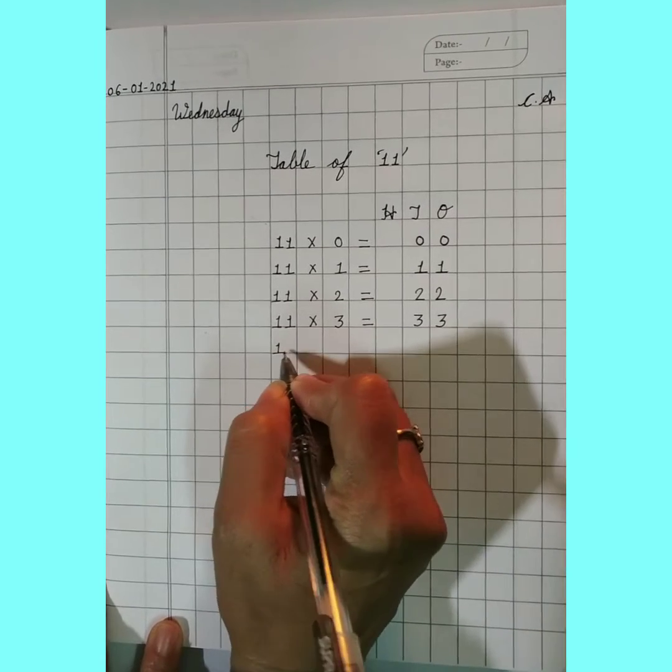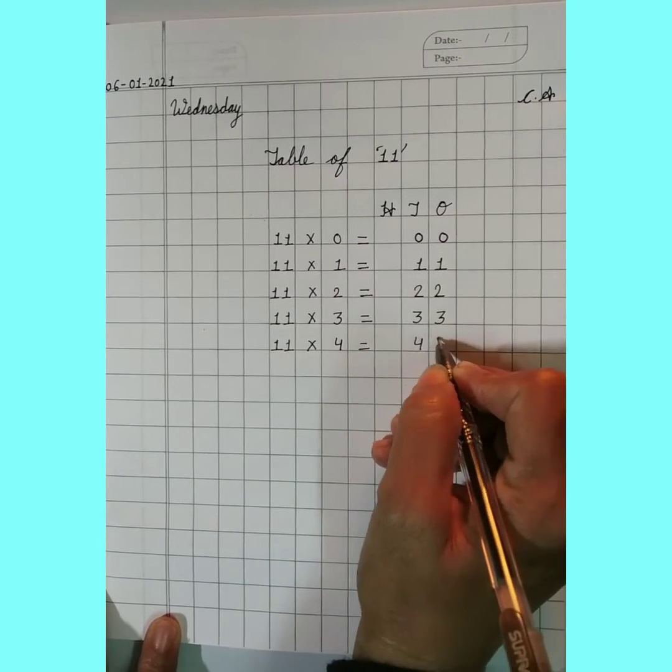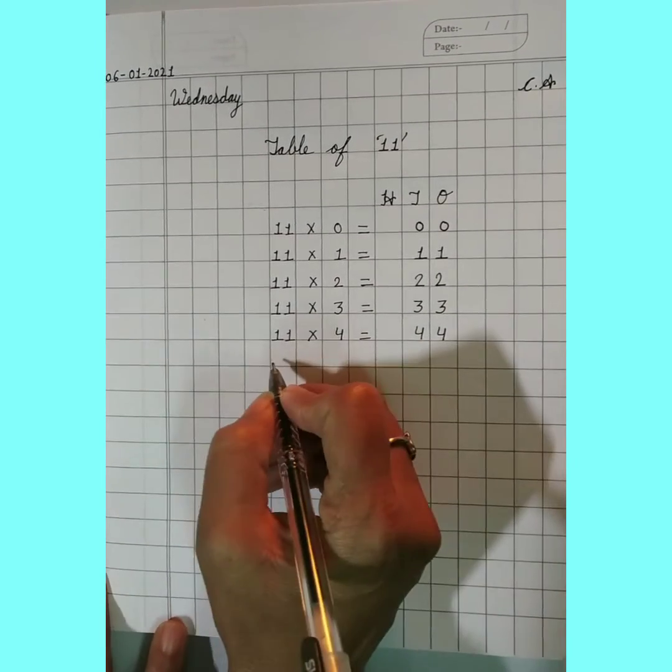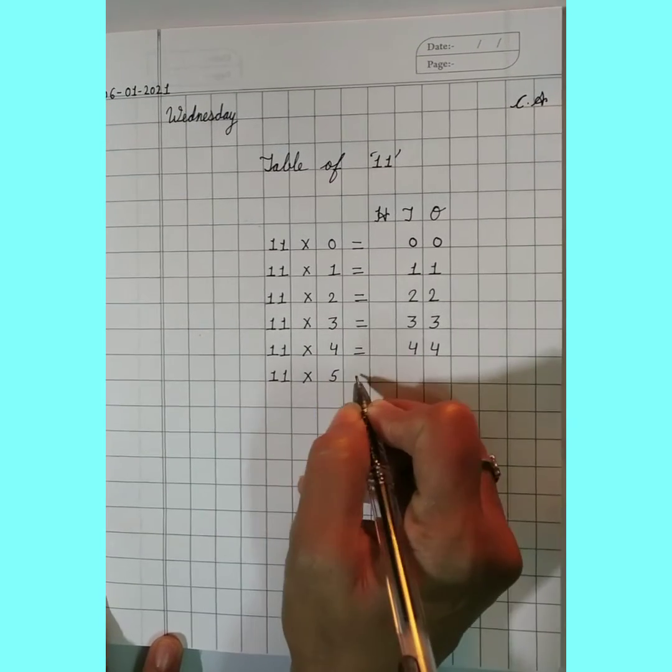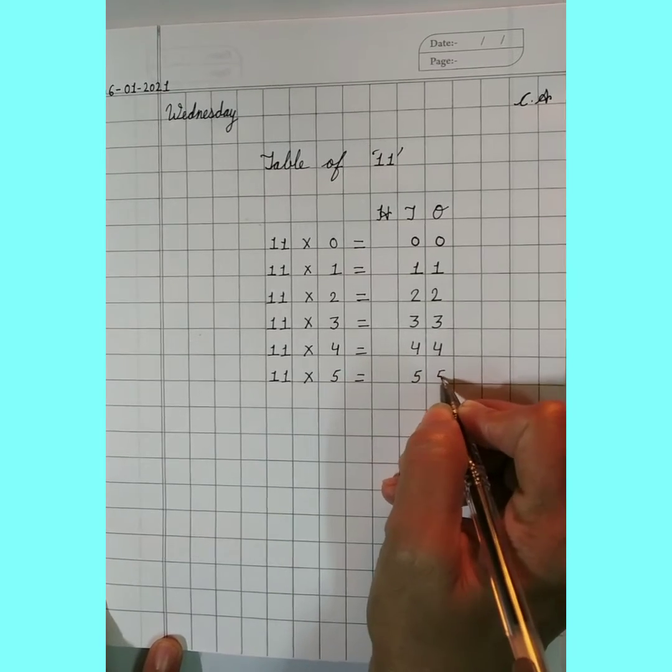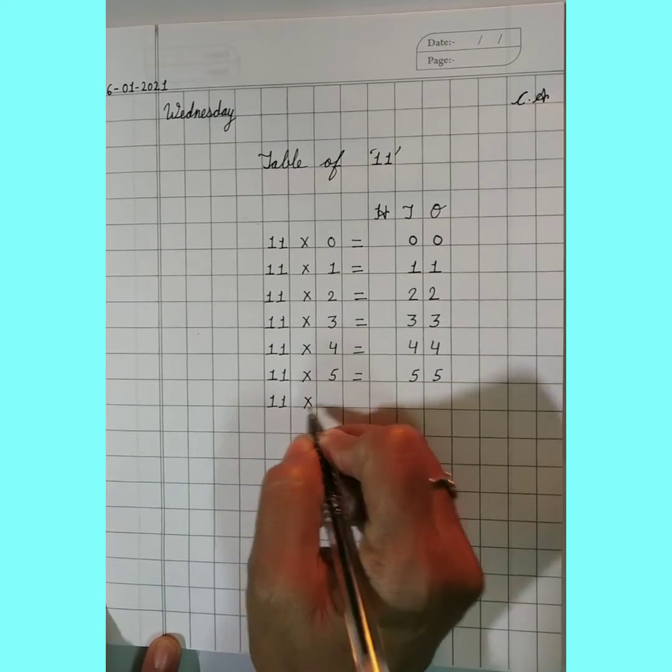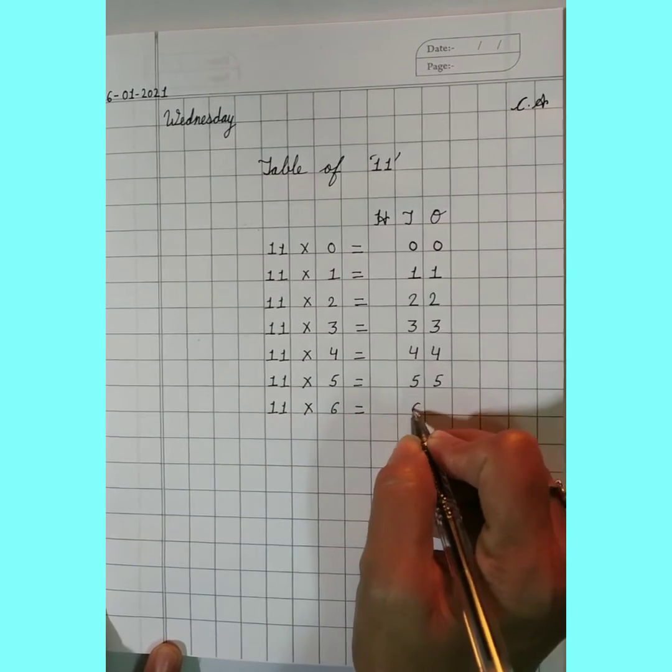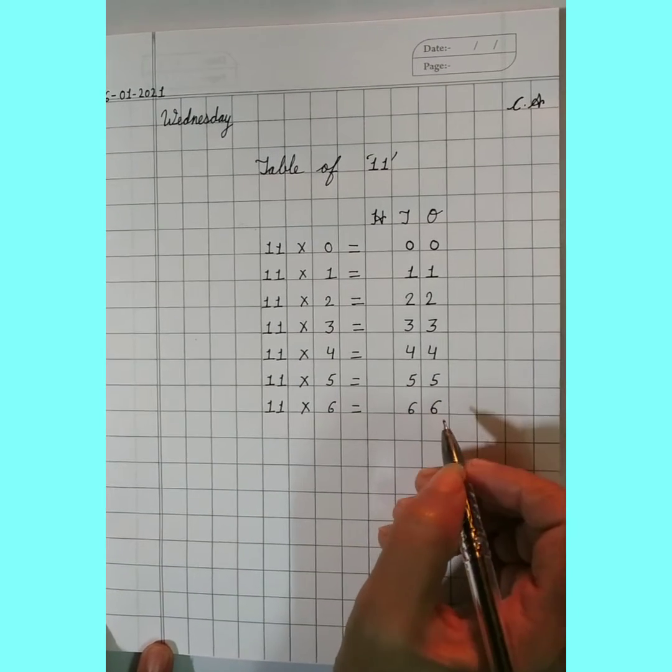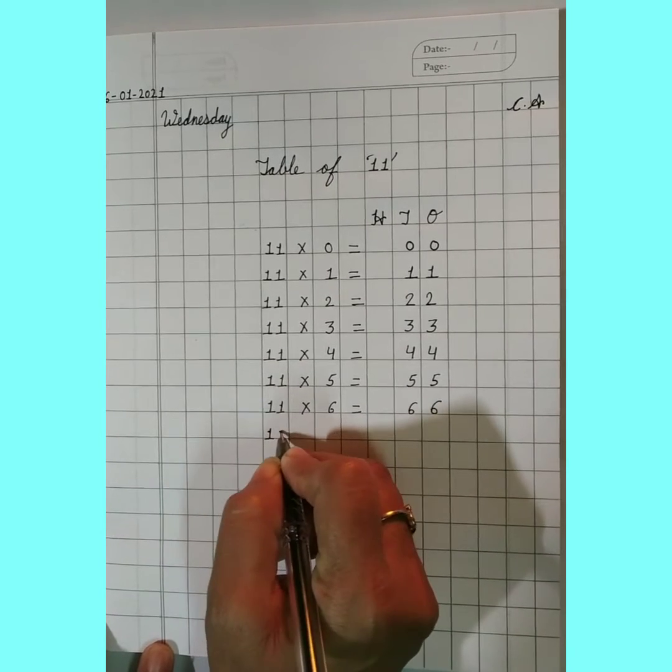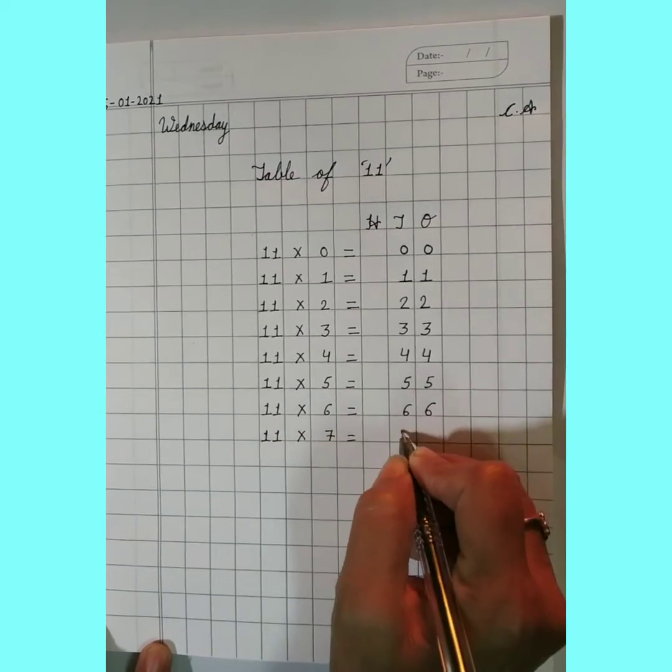Next, 11 by 4 equals 44. 11 by 5 equals 55. 11 by 6 equals 66. We will see here the same number is going on. 11 by 7 equals 77.